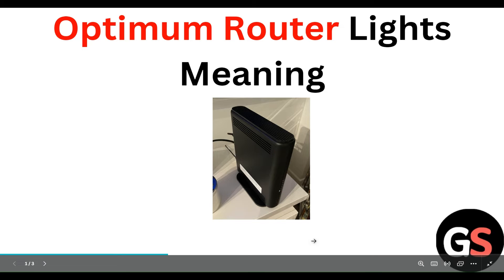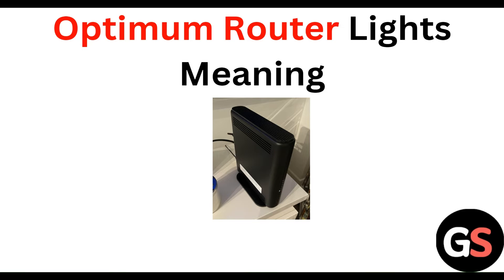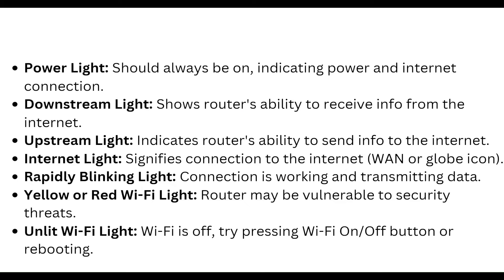Hello everyone, welcome to our YouTube channel. In this video we will guide you through the process of Optimum router light meanings. We are going to discuss each step. The power light should always be on, indicating power and internet connection. The downstream light shows the router's ability to receive information from the internet.